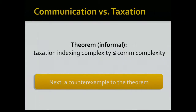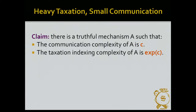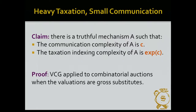I want to show there exists a truthful mechanism A with two properties: first, the communication complexity of A is c; second, the taxation indexing complexity is exponential in c. So not only is the taxation complexity not bounded above by the communication complexity — the gap is actually huge sometimes. The mechanism A is simply VCG applied to combinatorial auctions when the valuations of the bidders are gross substitutes.